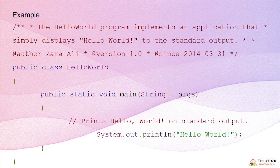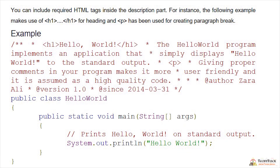In the example, multiline comments use the usual symbols as discussed, and the rest of the program uses double slash for single line comments. These are the normal types of comments we are familiar with. You can also include required HTML tags inside the description part, and HTML tags can be used inside the comments.